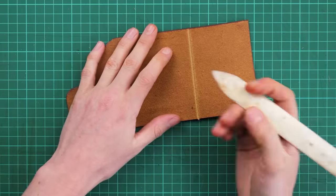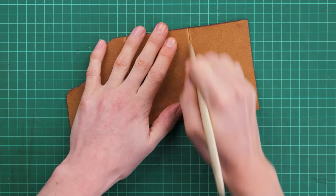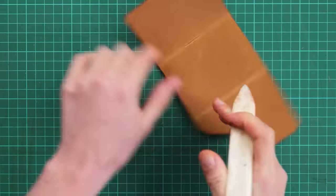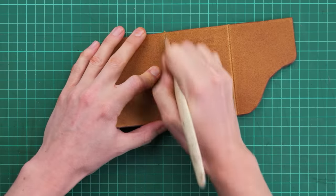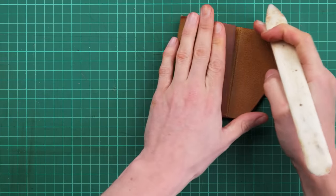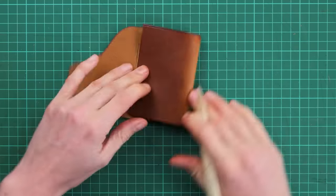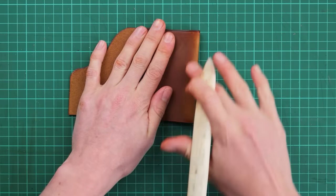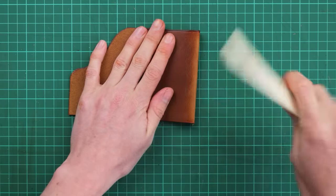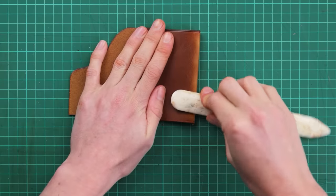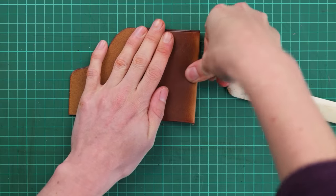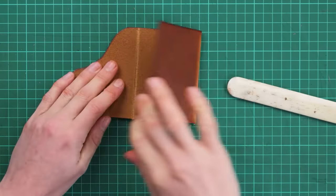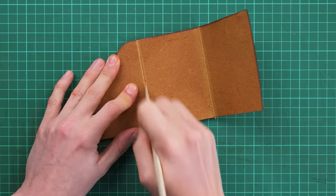And then using your bone folder you can just run that up and down that line and that will just help turning that side over. It doesn't matter what side you do first because we're going to have to turn both the inside section and the front section in on themselves. And just work your thumb up and down that turn edge just to help it fold over.